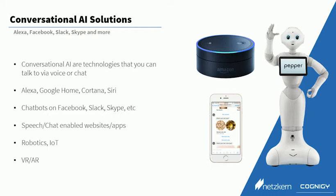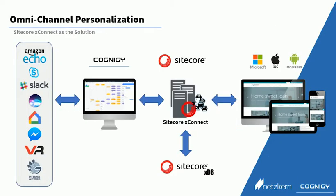So how does the omnichannel personalization story here work? On the one hand we have the devices like Echo, Slack, or Google Home, which we call channels. These are channels into the conversational AI, which in this case is powered by Cognigy AI. Cognigy AI uses information which is stored in Sitecore XDB by connecting to the new Sitecore 9 XConnect. So we are retrieving information about the person who is using Alexa or Facebook Messenger, and the information we have about them, to deliver a personalized experience.